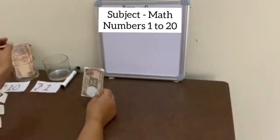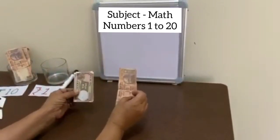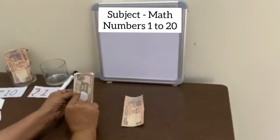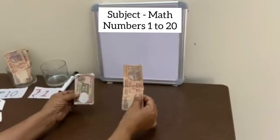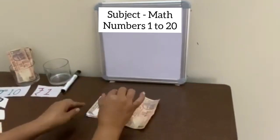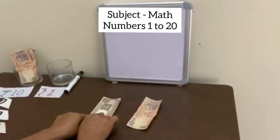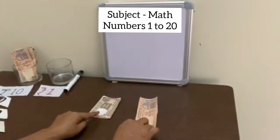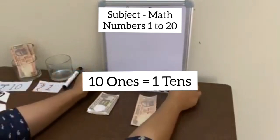So if now I take 1 note of rupees 10 instead of taking 10 notes of rupees 1, the value will be same. So if I change their name, we call currency notes of rupees 1 as 1s and currency notes of rupees 10 as 10s. So 10 1s is equal to 1 10s.